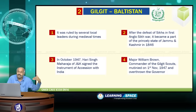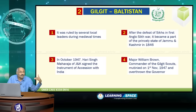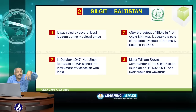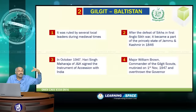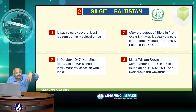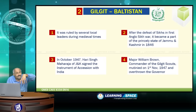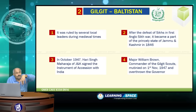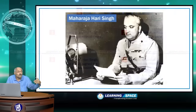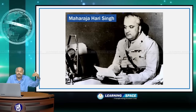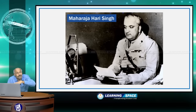Going back to history: Gilgit-Baltistan was ruled by several local leaders during medieval times. After the defeat of the Sikhs in the First Anglo-Sikh War of 1845–1846, it became part of the princely state of Jammu and Kashmir in 1846, and remained so until 1947. In 1947, Maharaja Hari Singh signed the Instrument of Accession to India, so technically Gilgit-Baltistan should have come to India.